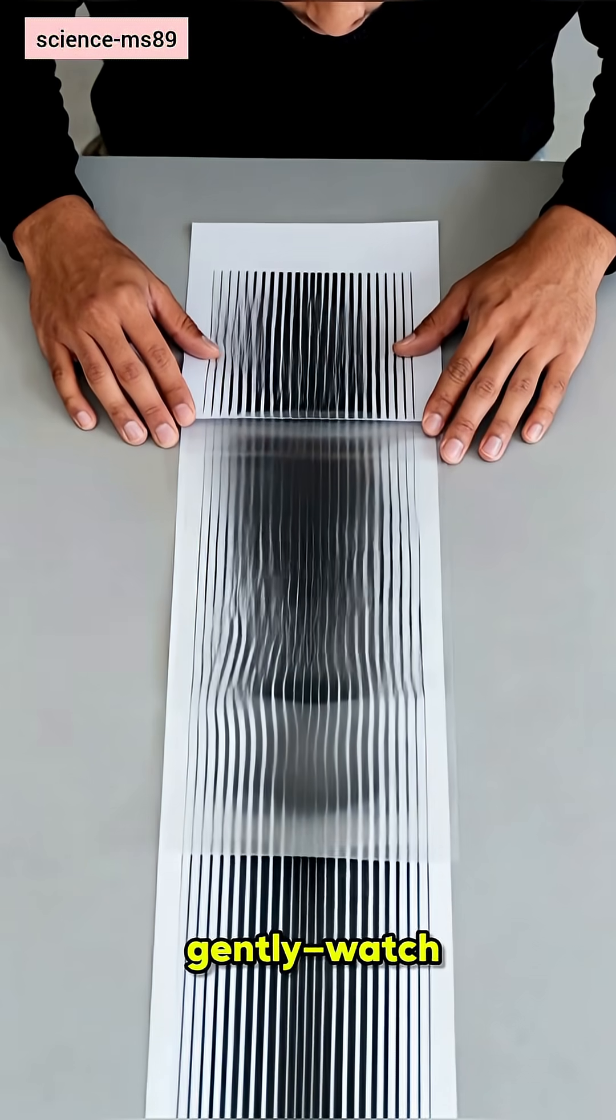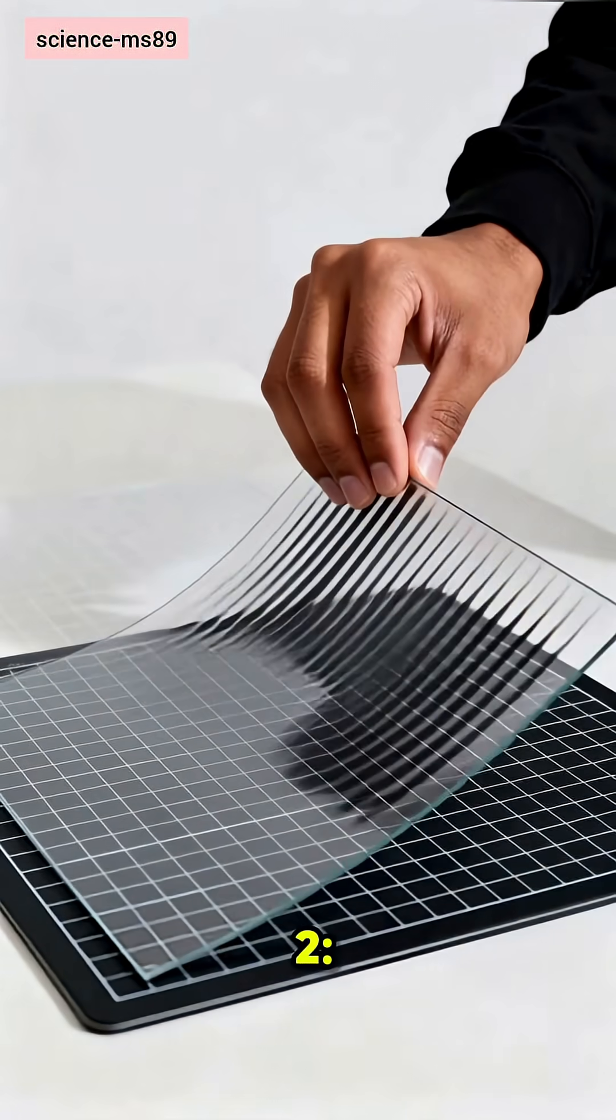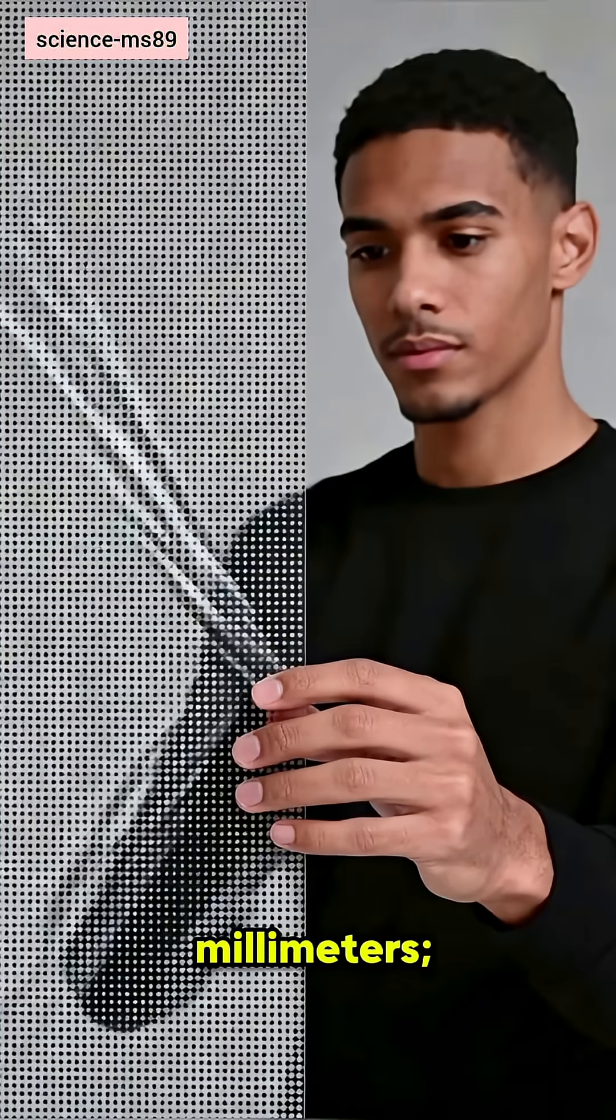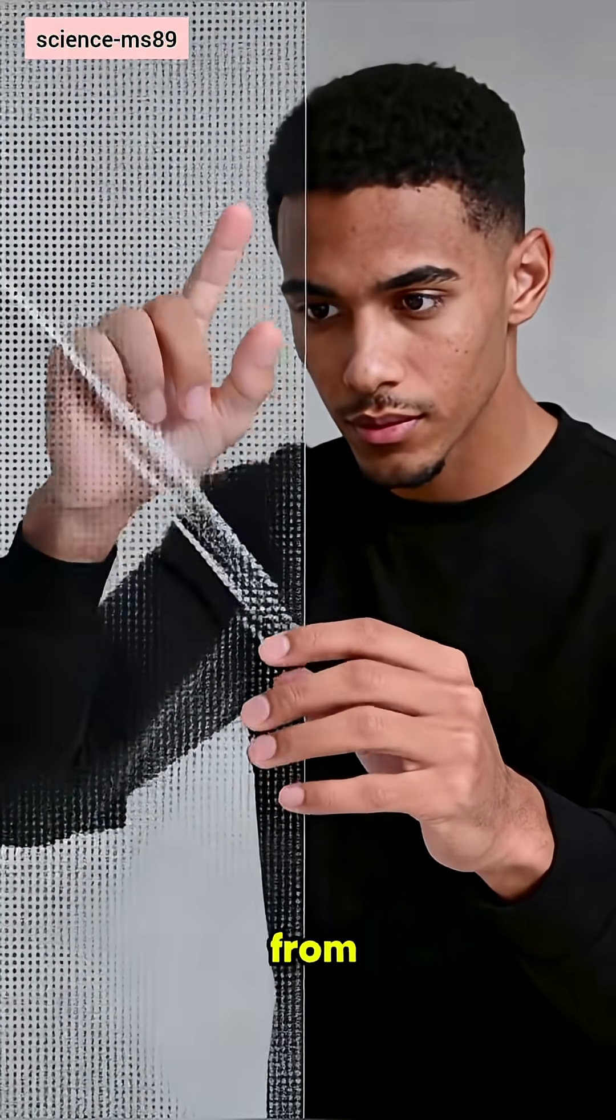Step two: try grids or dots. Move by millimeters and dramatic waves appear from tiny offsets.